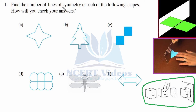Question 1: Find the number of lines of symmetry in each of the following shapes. How will you check your answers? We will check with the help of a mirror. We will place the mirror vertically along the line of symmetry and see the reflection. For the first part, we will place the mirror on the line of symmetry and visualize the other part in the mirror. If the pattern appears the same as the figure, we will say it is the line of symmetry.